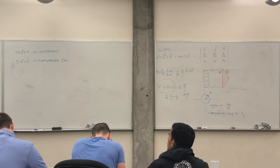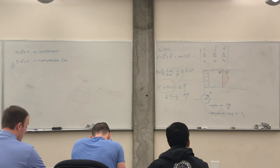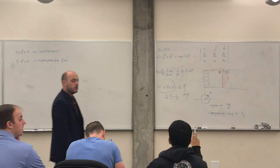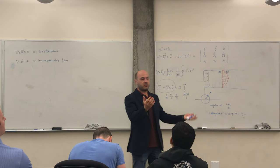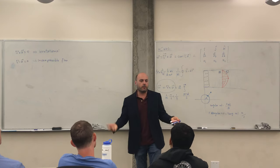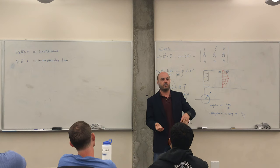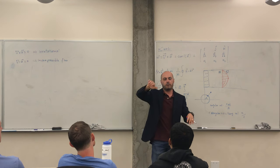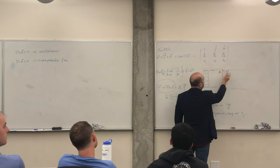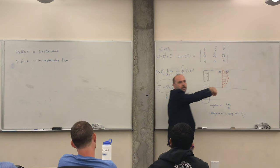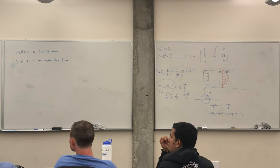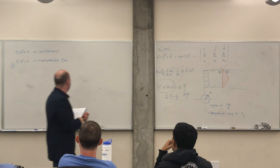Any questions? What happens when curl is positive versus negative? It just means rotation in different directions. In irrotational flows there are theorems where you must conserve vorticity — a region of positive vorticity must be counterbalanced by a region of negative vorticity. So positive curl means an element rotates one way, negative means it rotates the other way.